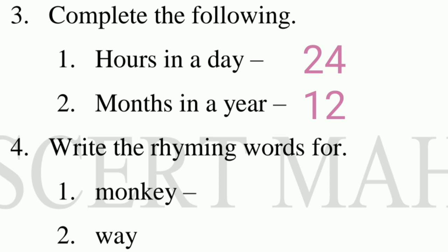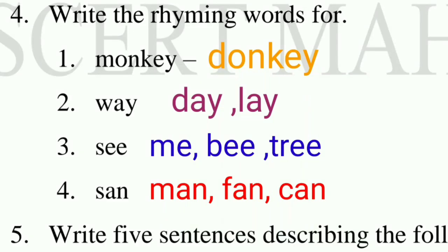Next question: Write the rhyming words. First word is 'monkey' — rhyming word is 'donkey'. Second is 'way' — rhyming words are 'day' and 'lay'. Third is 'me' — rhyming words are 'b' and 'tree'.